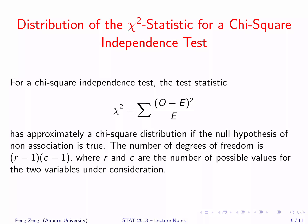Similar to the goodness of fit test, the test statistic approximately follows a chi-square distribution. The degrees of freedom, however, is different. It is (R−1) times (C−1), where R and C are the number of possible values for the two variables under consideration.